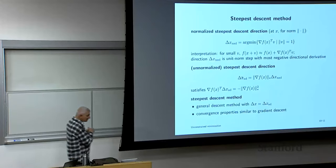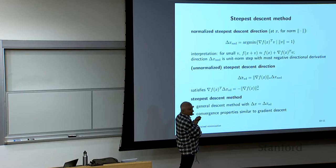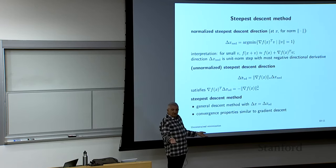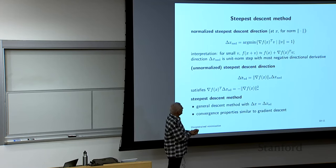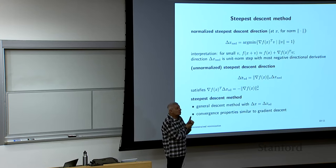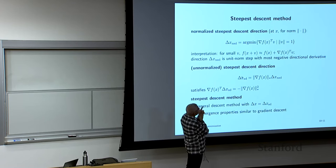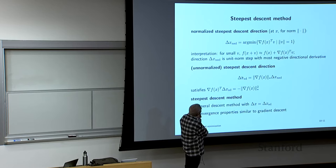One principled way to think about this: if you go in a small direction V, the amount F decreases is approximately the gradient of F transpose V. You want that negative. You can't just minimize grad F transpose V without a constraint because it's unbounded below. So you need to give a norm to limit that — say, the norm of V less than or equal to one. This is the steepest descent direction, and it depends on the norm. You can normalize by the dual norm of the gradient. The steepest descent method is completely specified once you give a norm.